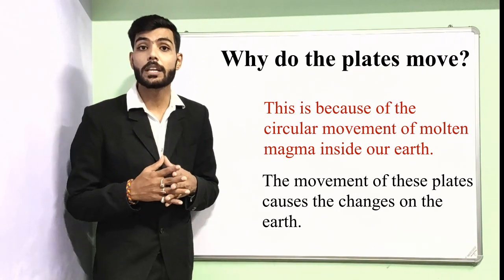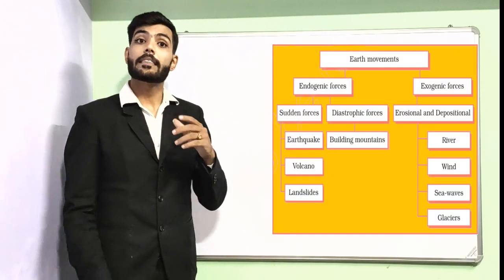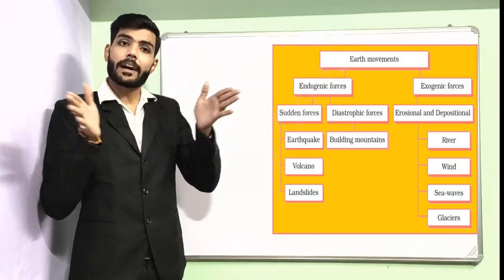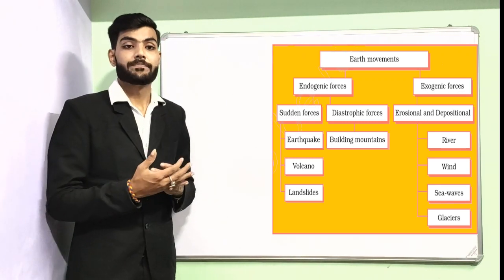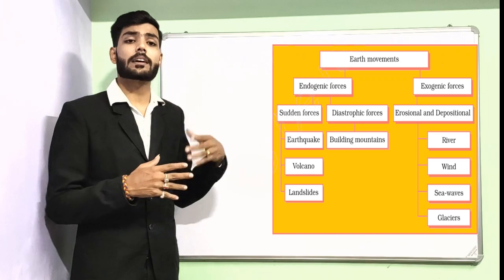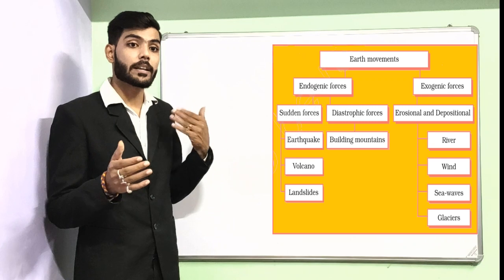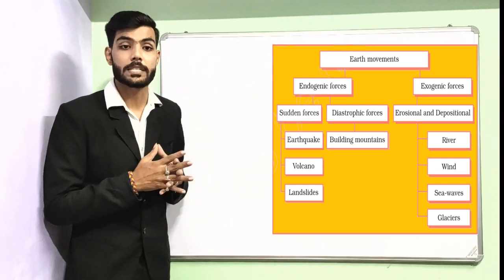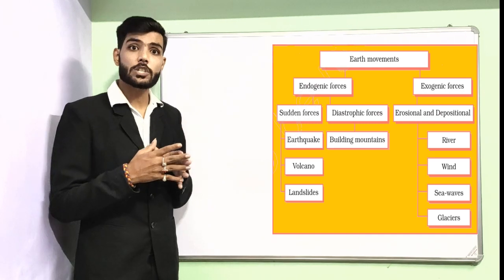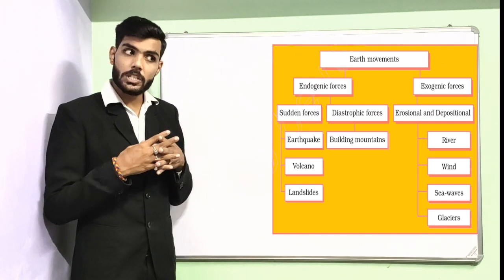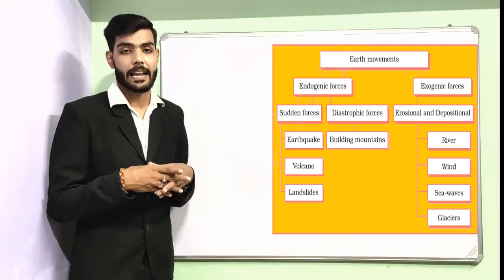Earth movements are divided into two types: endogenic forces and exogenic forces. Endogenic forces include sudden forces and diastrophic forces. Sudden forces, also known as catastrophic forces, are further classified as earthquakes, volcanoes, and landslides.